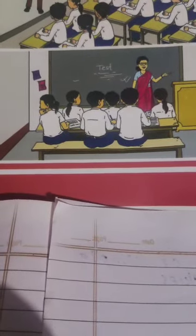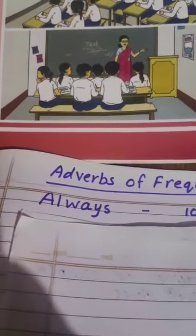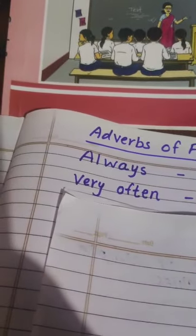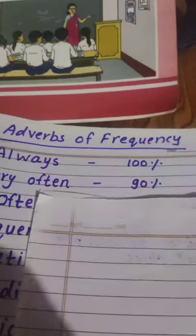So the first word is always. Always means 100 percent. I always brush my teeth. Very often means 90 percent.